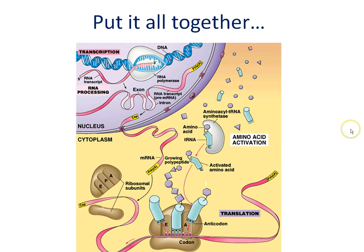When your hair is growing, that's the keratin protein being made by this process. If you're sick, your B cells produce antibodies, which are chains of amino acids assembled using messenger RNA that got its codes from DNA. All those proteins in your body — actin and myosin for your muscles — are all made the same way.